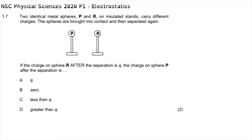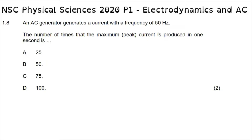Question 1.7 of multiple choice reads: two identical metal spheres P and R on insulated stands carry different charges. The spheres are brought into contact and then separated. If the charge on sphere R after separation is q, the charge on sphere P after separation is... When spheres are brought into contact, charges combine and are shared equally, so both end up with the same charge. If sphere R has charge q, sphere P also has charge q — making the correct answer A.